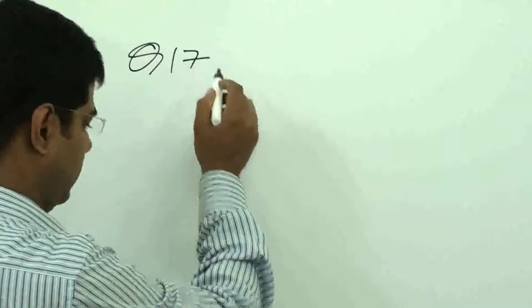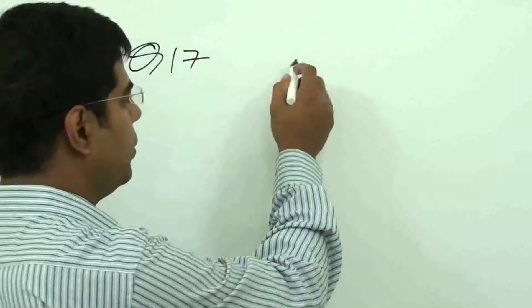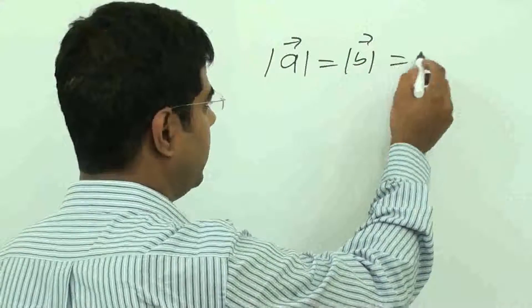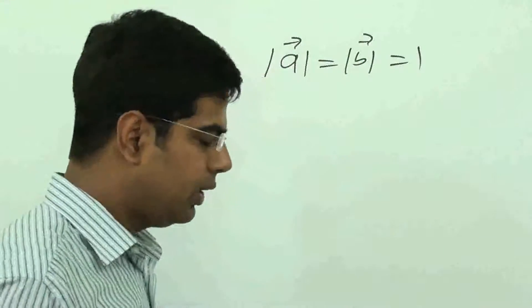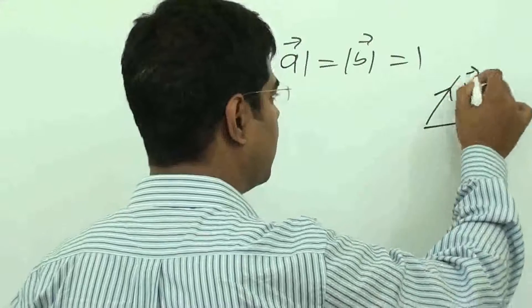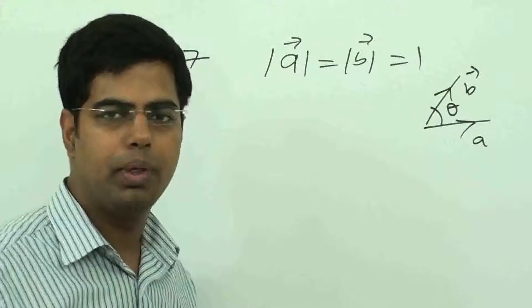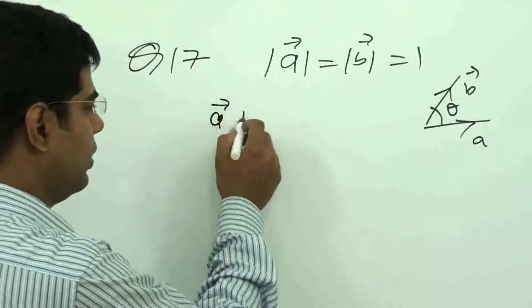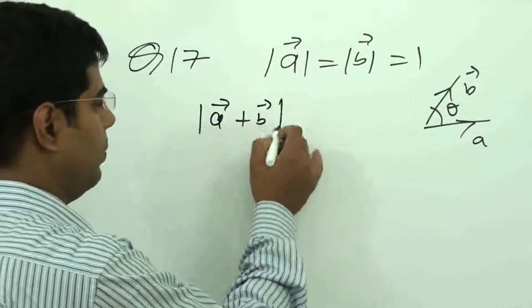Question 17. A and B are two unit vectors, so magnitude of A and magnitude of B is equal to 1. Theta is the angle between them. If A vector equals B vector, theta is the angle between them. A plus B is a unit vector, meaning mod of A plus B is 1.